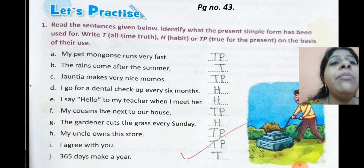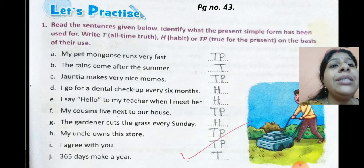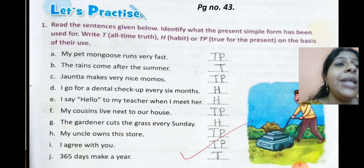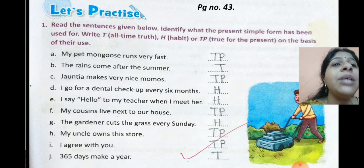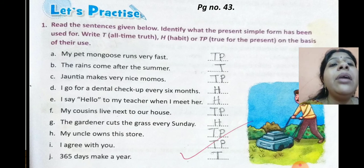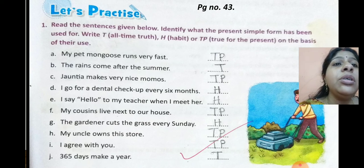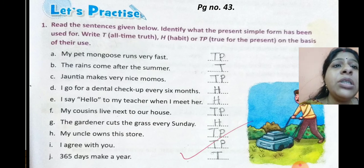Let's find out. Number A: 'My pet mongoose runs very fast.' That is TP — true for the present, it can change in the future. Write capital T and capital P. Number B: 'The rains come after the summer.' That is a general truth — write T.